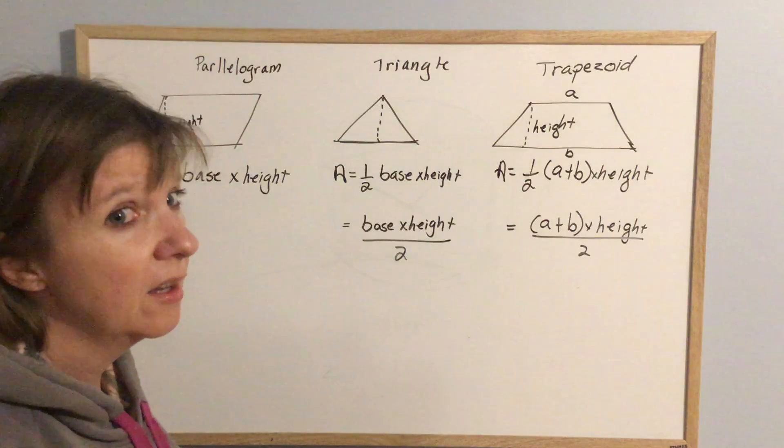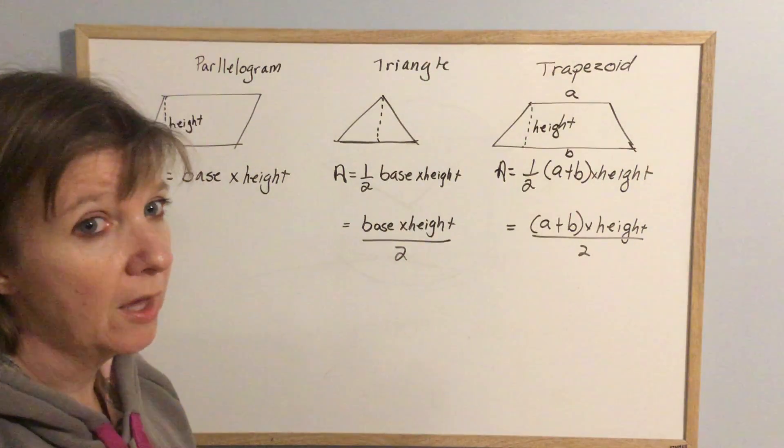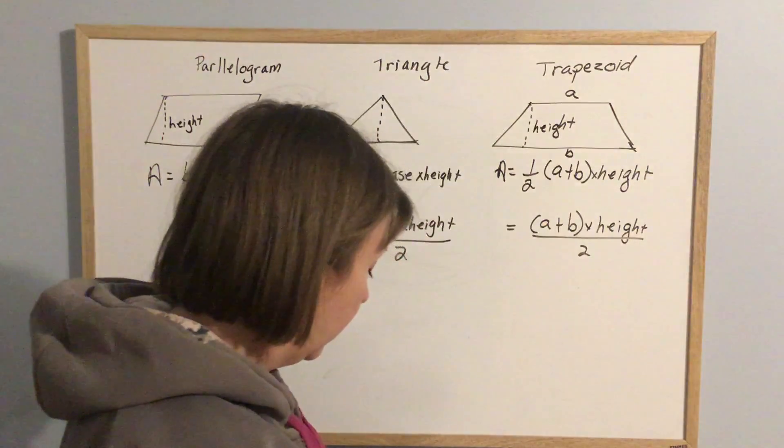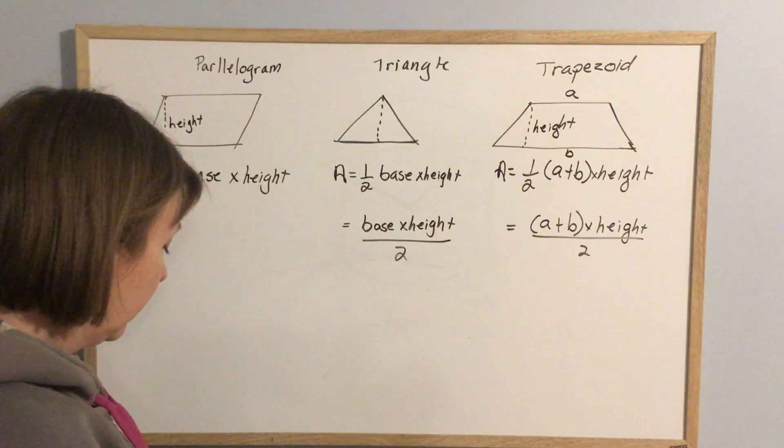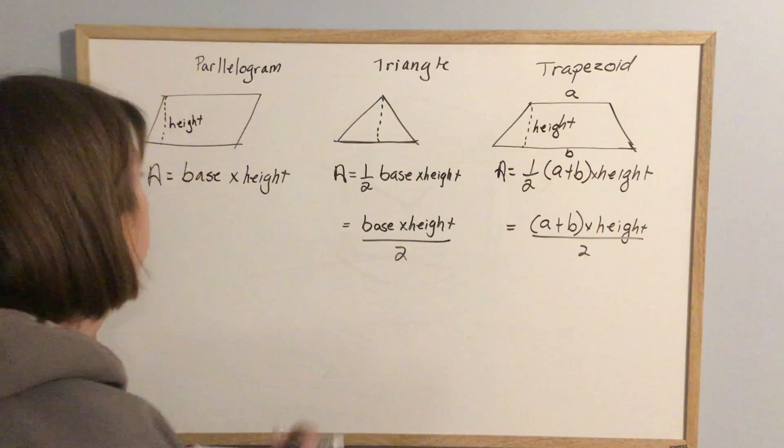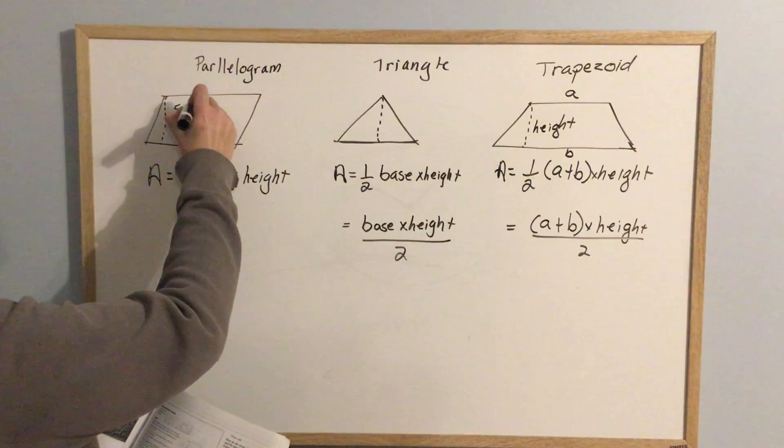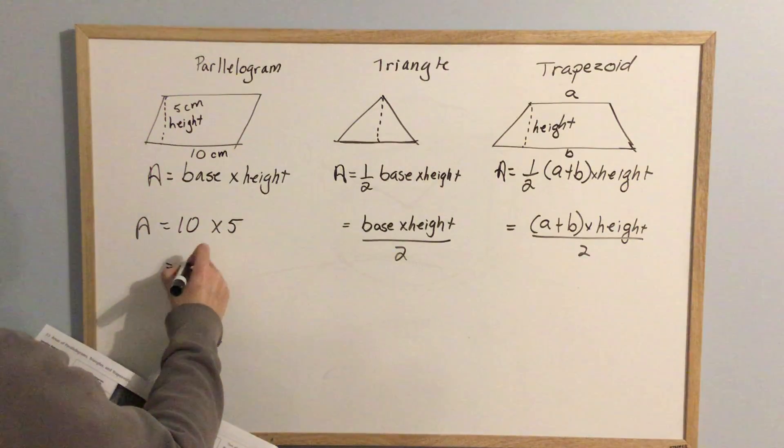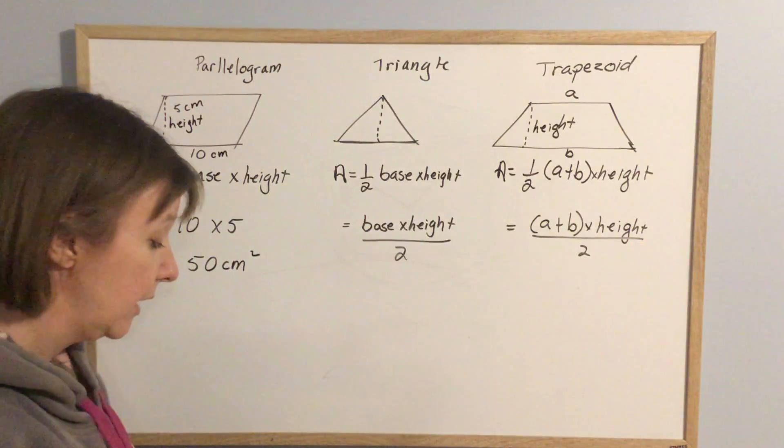So three quick examples. Just one of each shapes and that's it. There's really nothing else to this. So in the first one, they tell us that the base is 10 centimeters and the height is 5 centimeters. So the area is just 10 times 5, which is 50 centimeters squared. Couldn't be easier. Base times height.